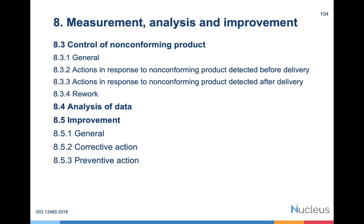Clause 8.4 is analysis of data — here you have to consider various data including data from customers and post-market surveillance studies. Then under Act and Improvement, there are two specific requirements: corrective action and preventive action. Preventive action is a mandatory requirement. Although we started with a risk-based approach in clause 4.1, preventive action here means: after detecting a non-conformity, you must consider whether any potential non-conformity still exists — that is what we have to address.